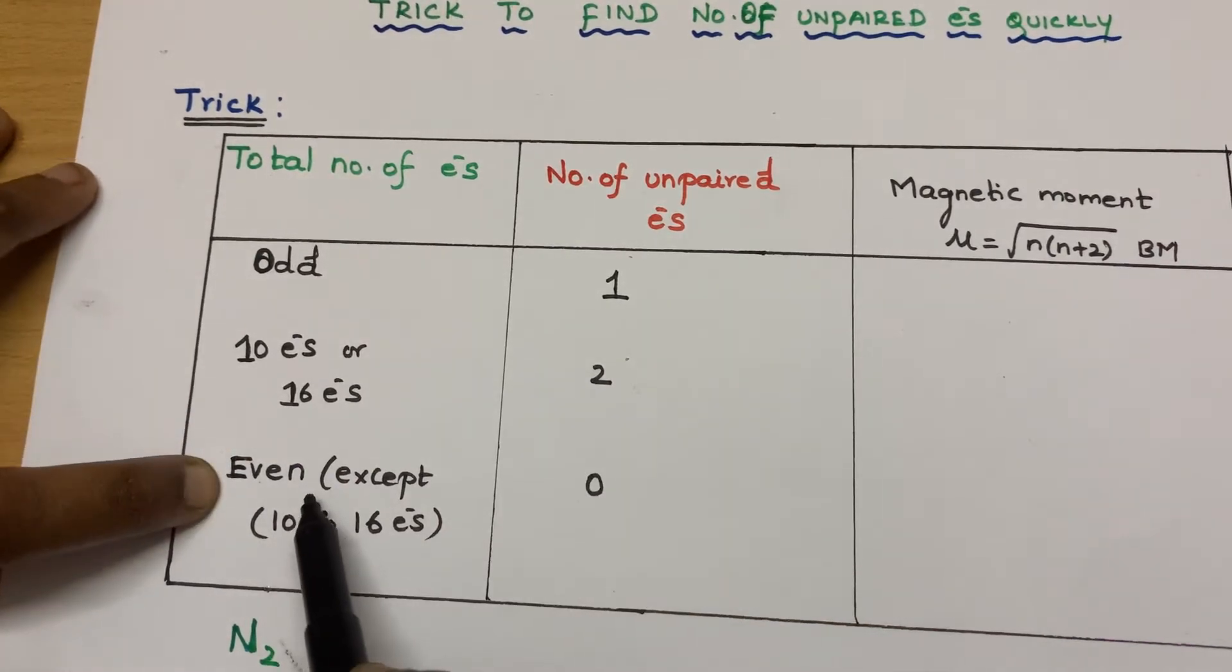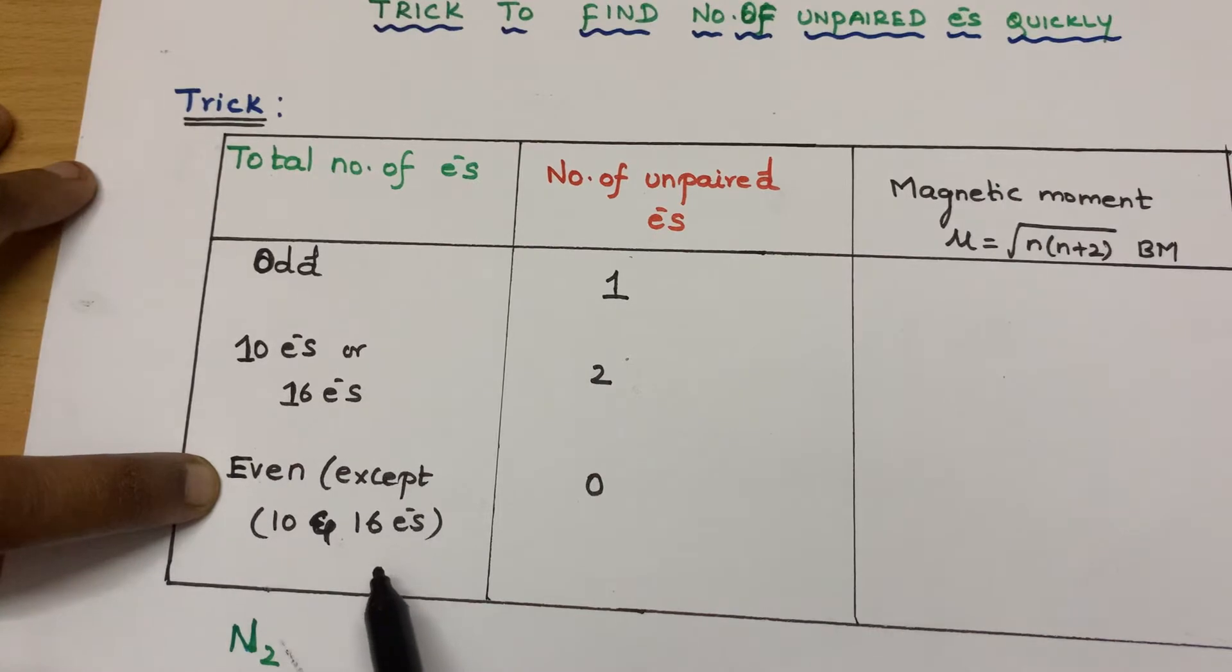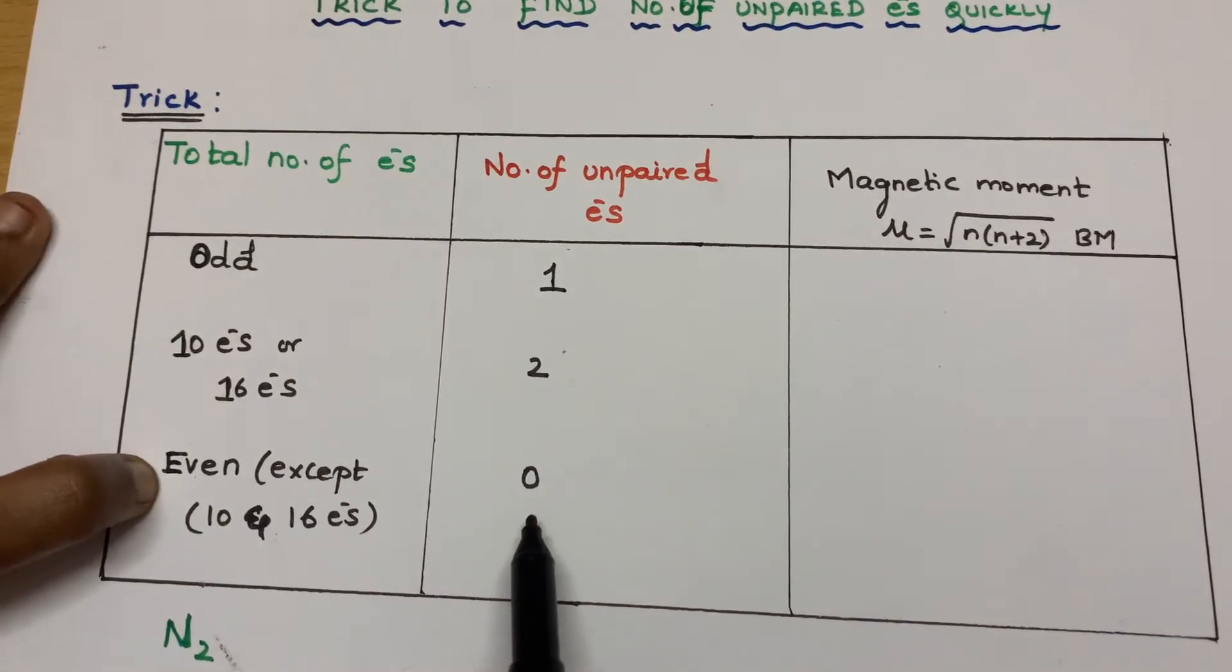So remember, then if it is even except this 10 and 16, then it will not have any unpaired electrons, zero unpaired electrons.